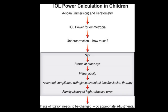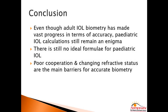Summarizing IOL power calculation in children: first, perform excellent keratometry and biometry measurements; then calculate the emmetropic IOL power; then plan the degree of under-correction based on age, fellow eye status, visual acuity, expected compliance with glasses, and family history of refractive errors — and arrive at the final IOL power. In conclusion, despite great advances in adult biometry including the latest-generation optical biometers, pediatric IOL calculation still remains an enigma with no ideal IOL formula. Poor cooperation and a changing refractive status are the main barriers to accurate biometry.